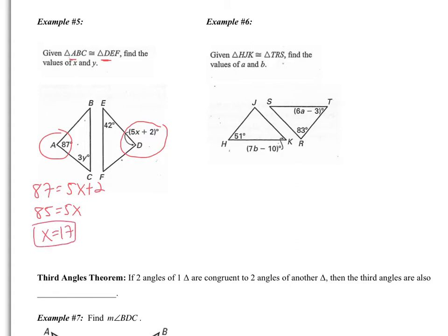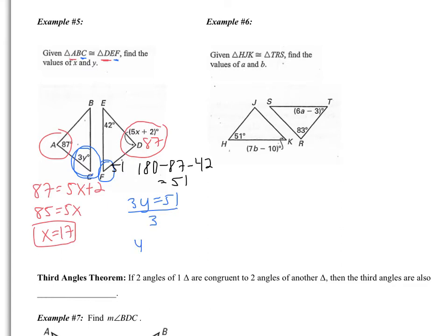For Y, Y is angle C. Angle C should be congruent to angle F, but I don't have angle F given. So I need to find it. I know angle D is 87 because it's congruent to angle A. All three angles of a triangle add up to 180. So if I take 180 and subtract 87 and subtract 42, that gives me 51, which is the measure of angle F. So now I can do 3Y equals 51, divide by 3, and I get Y equals 17 also. Notice it's just a coincidence that these both are 17.